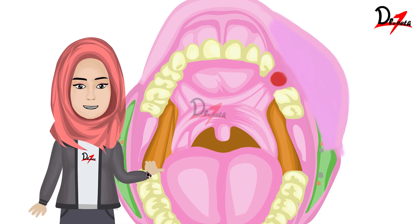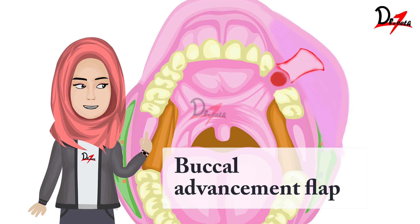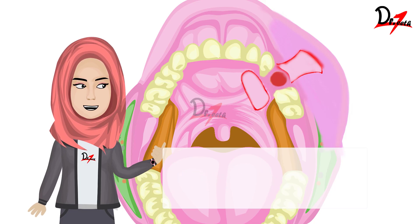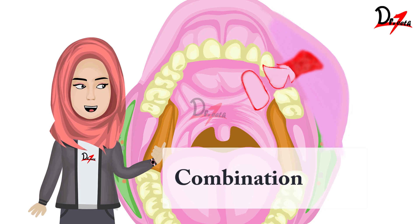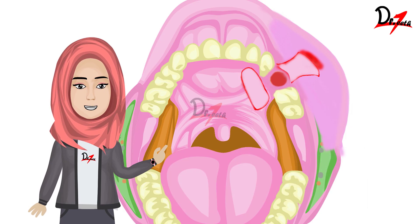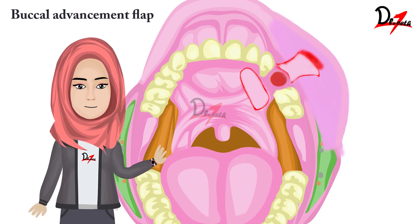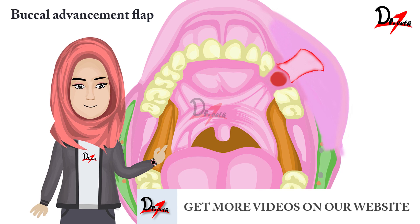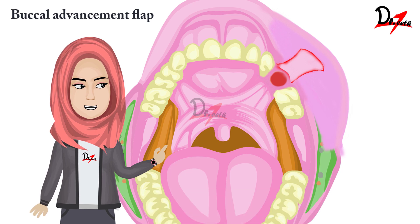In surgical repair, three types of flaps can be used to close the defect: the buccal flap, the palatal flap, or a combination of both. The buccal flap advancement procedure is said to be the most satisfactory method for closing the fistula. For this procedure, we give a local anesthetic in the mucosal fold, which not only numbs the area but also constricts the blood supply due to the vasoconstrictive property of the anesthetic, reducing chances of hematoma formation.